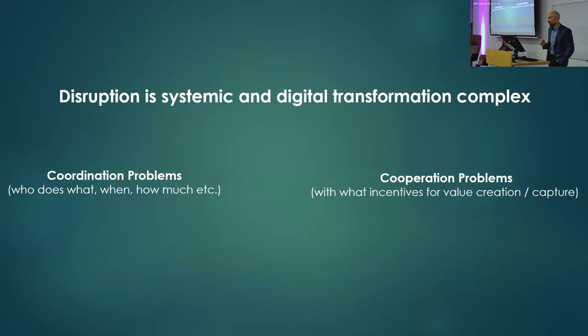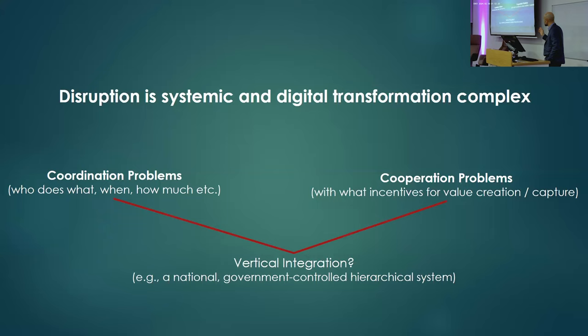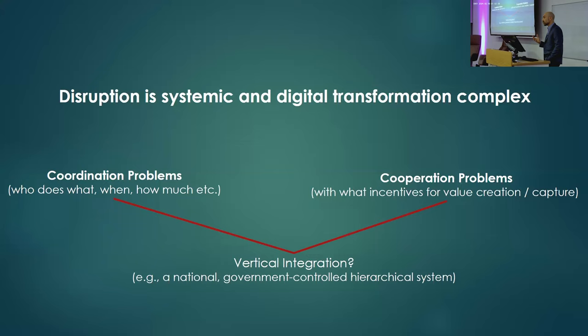Unforeseen contingencies arise because of the interdependencies between different stakeholders, creating complex problems of coordination — who does what, when, and in what quantities — but also problems of cooperation: what incentives do you provide to different actors to innovate and create and capture value? The classical remedy to complex coordination and cooperation problems is vertical integration. If you control the supply side hierarchically, you manage risks and guard against one actor taking advantage of others.